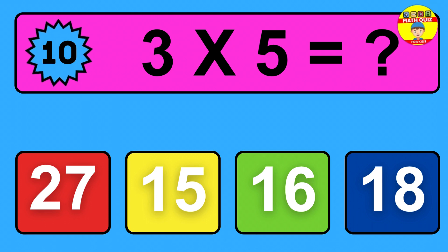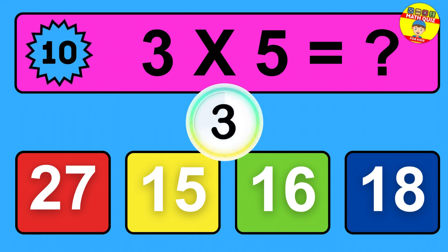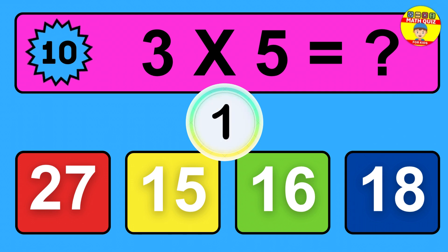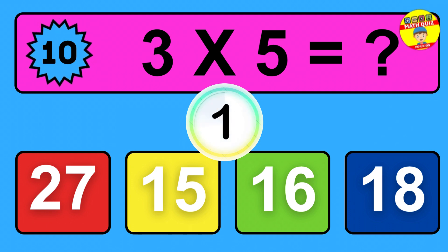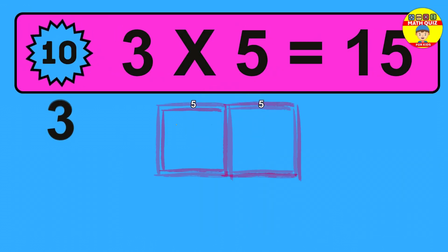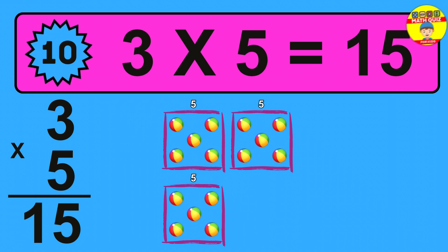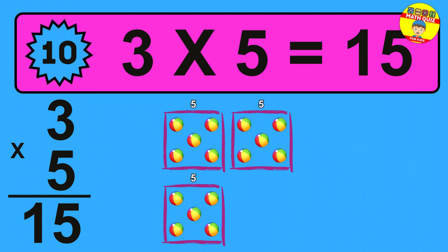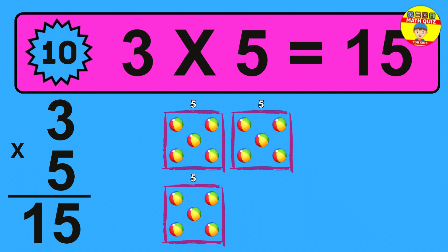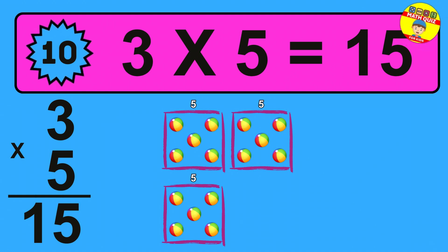Question 10: 3 times 5 equals what? The answer is 3 times 5 is 15. To calculate, we have 3 groups with 5 balls each one. So how many balls do we have?